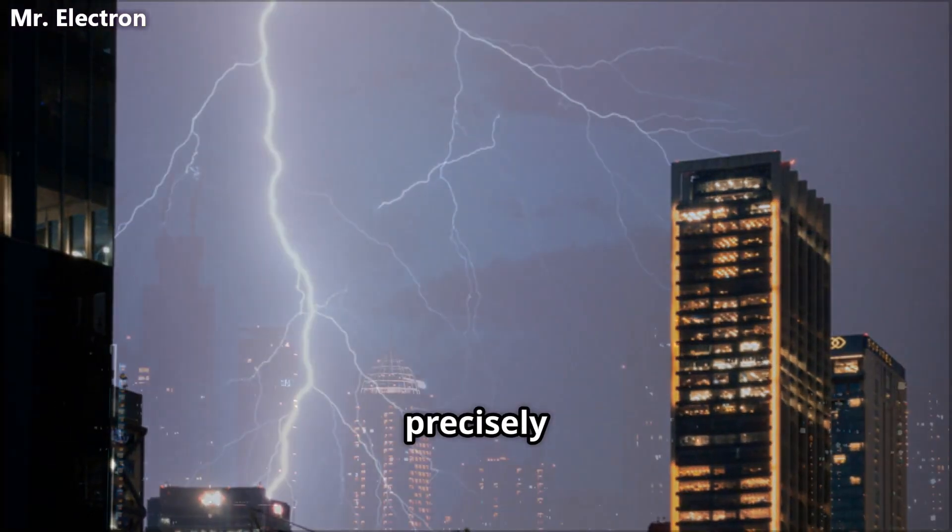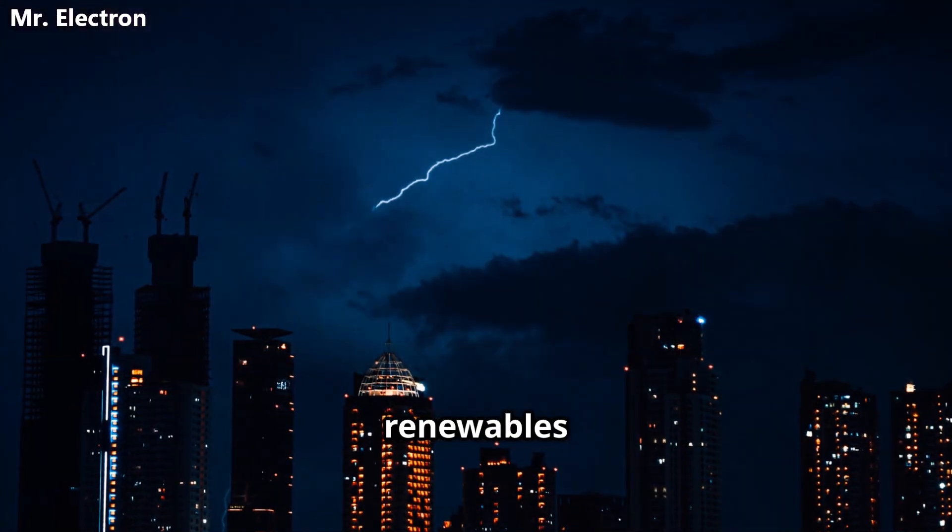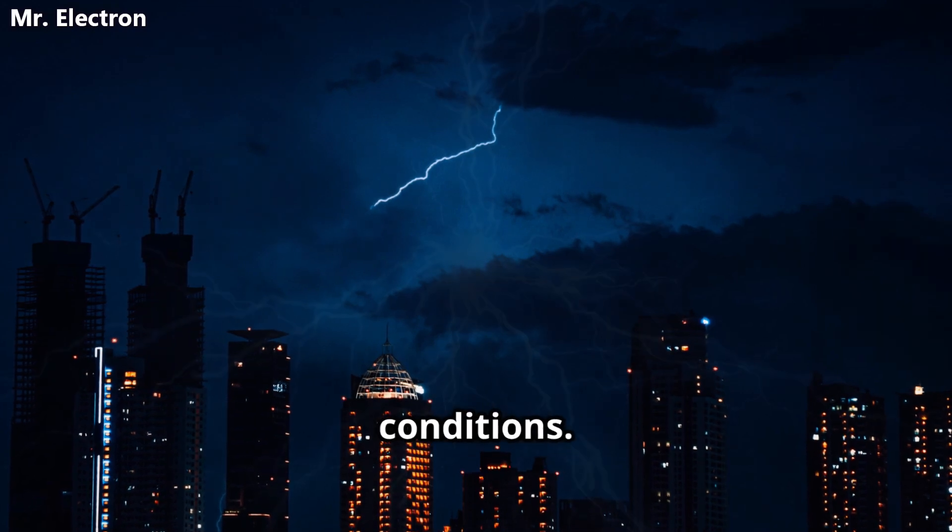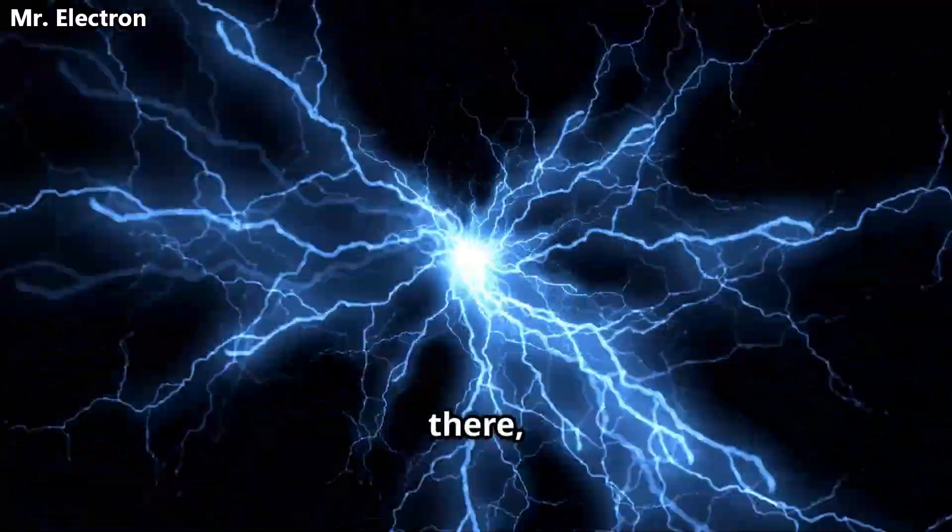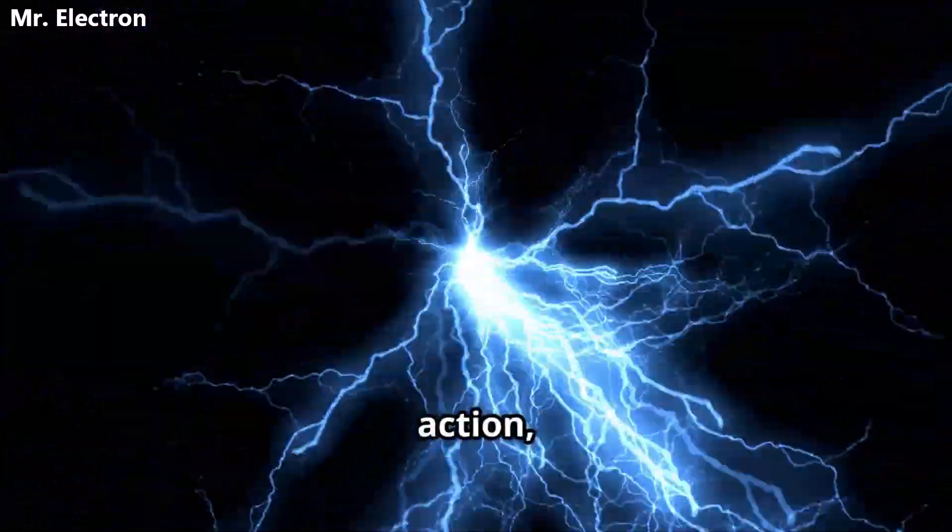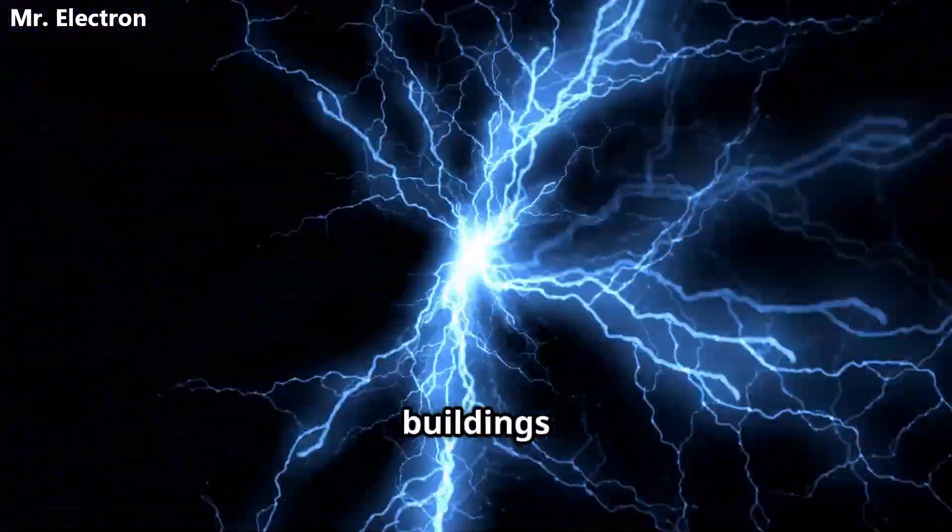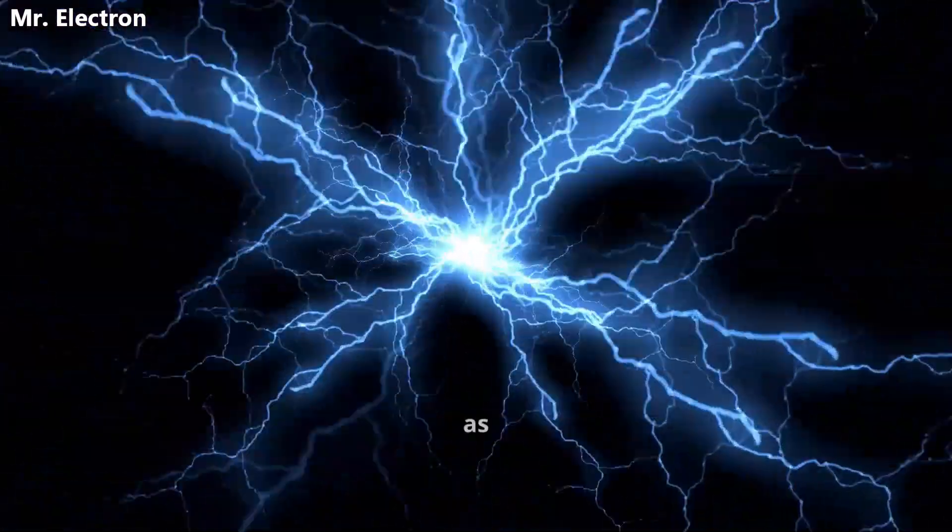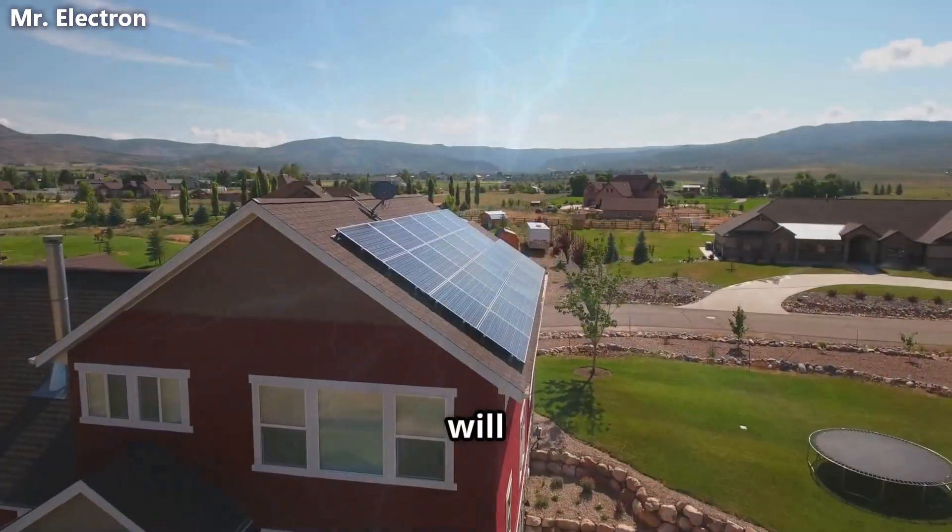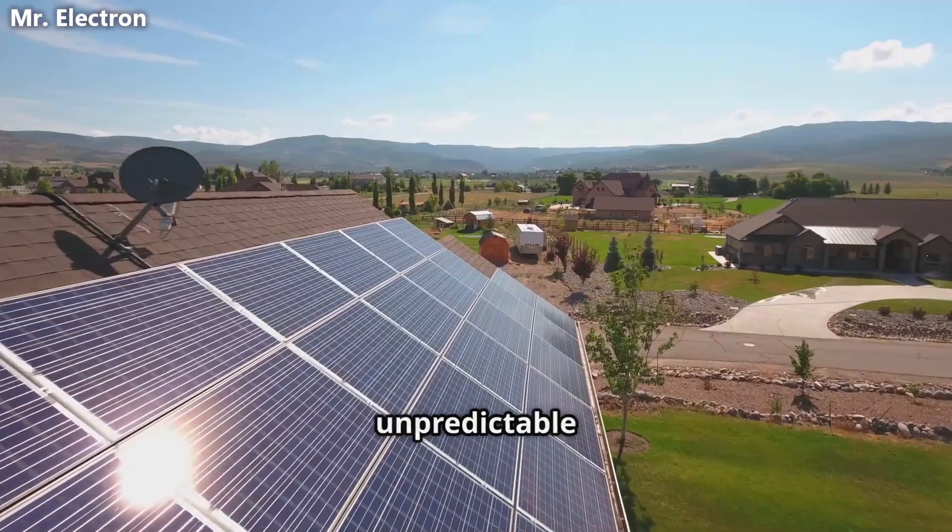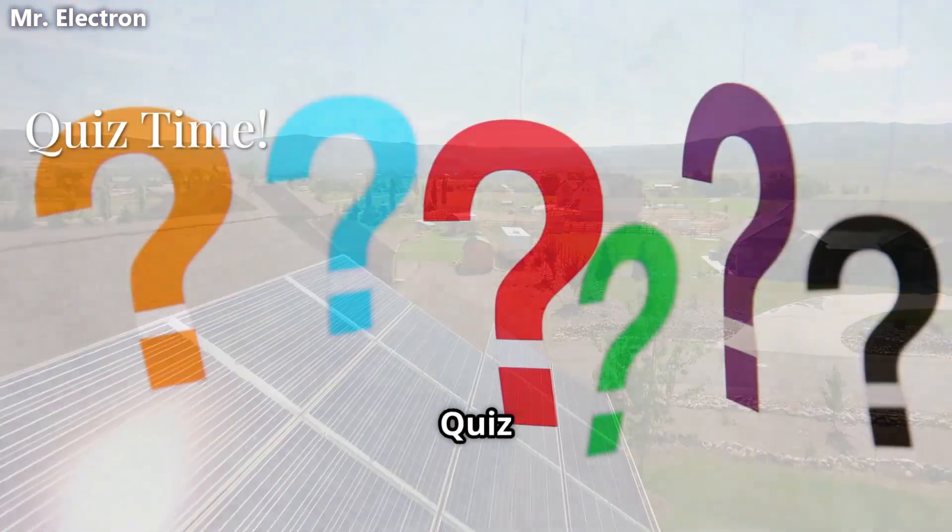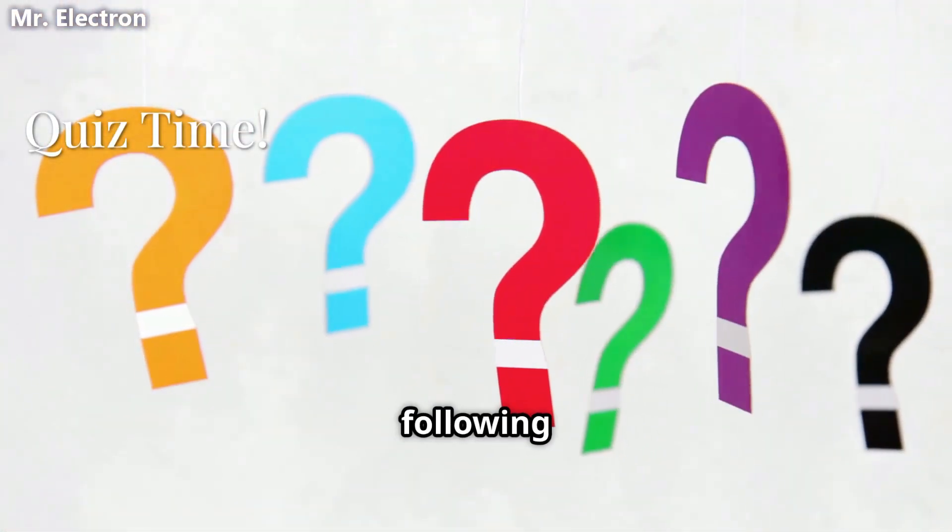With proper government support and scaled mass production, lightning energy harvesting systems can perfectly complement existing solar and wind installations, providing reliable clean energy precisely when those traditional renewables struggle with adverse weather conditions. The technology can easily be produced, the public demand is there, and with coordinated government action, lightning-powered buildings could become as common as solar-roofed homes, ensuring lasting energy security for all regardless of unpredictable weather patterns.